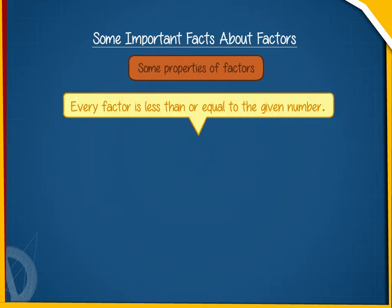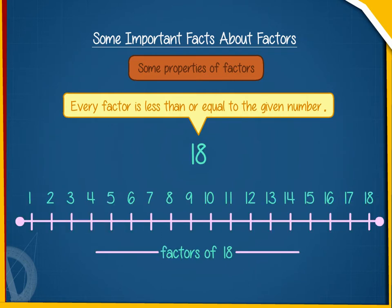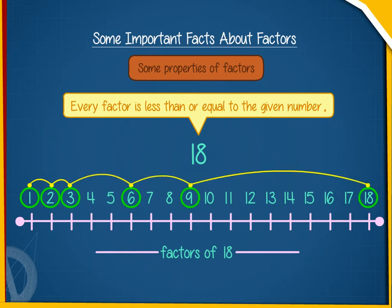We must also know that every factor is less than or equal to the given number. Consider the number 18. The factors of 18 are 1, 2, 3, 6, 9, and 18. Clearly, no factor is greater than 18.